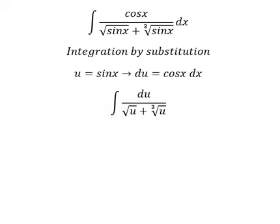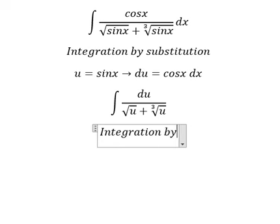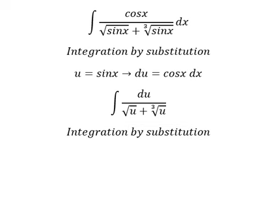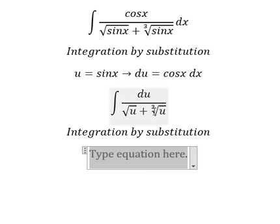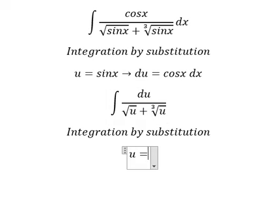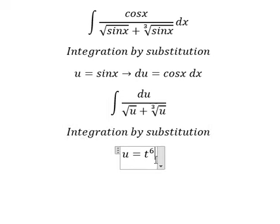Next, we can use another integration by substitution, because we want to cancel the root here. So we need to put u equals to t to the power of one-sixth. If we put this in, here we have t to the power of three and here we have t to the power of two.